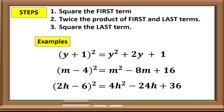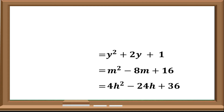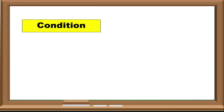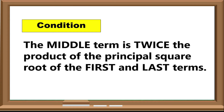The resulting product when you square a binomial is a perfect square trinomial. It means that we are going to find the factors of a squared binomial. To determine if the given trinomial expression can be factored using perfect square trinomial, just remember this: the middle term is equal to twice the product of the principal square root of the first and last terms.